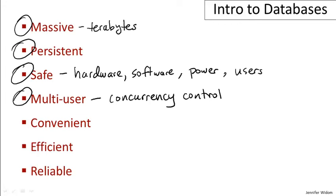Many users might be operating on the same database but be operating on different individual data items. It's a little bit similar to file system concurrency or even variable concurrency in programs, except it's more centered around the data itself.